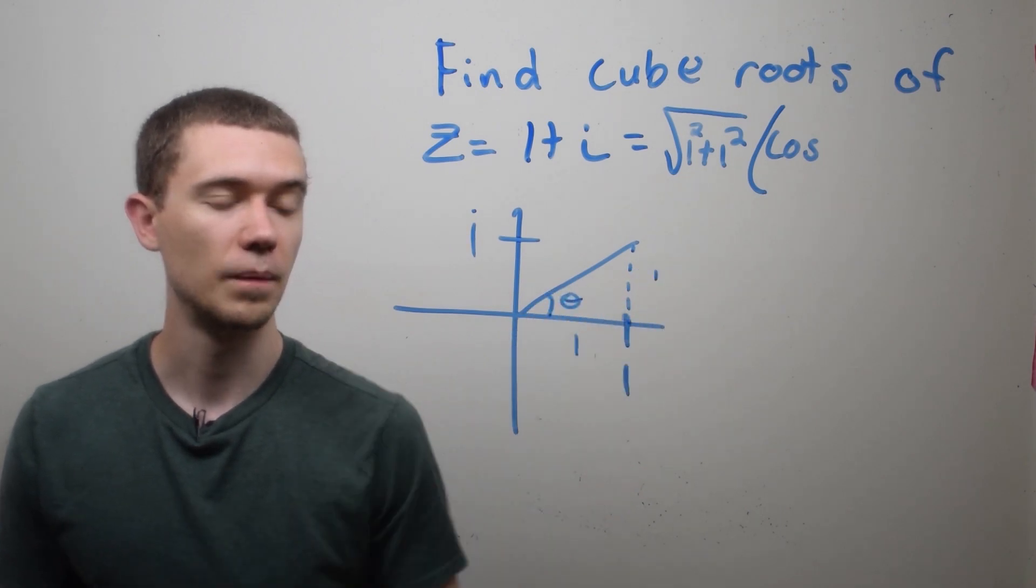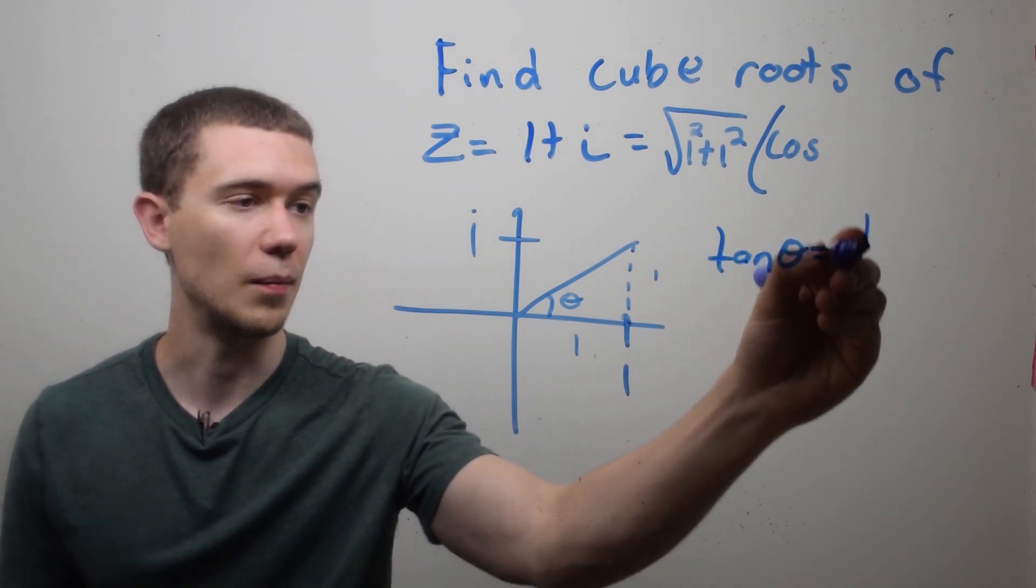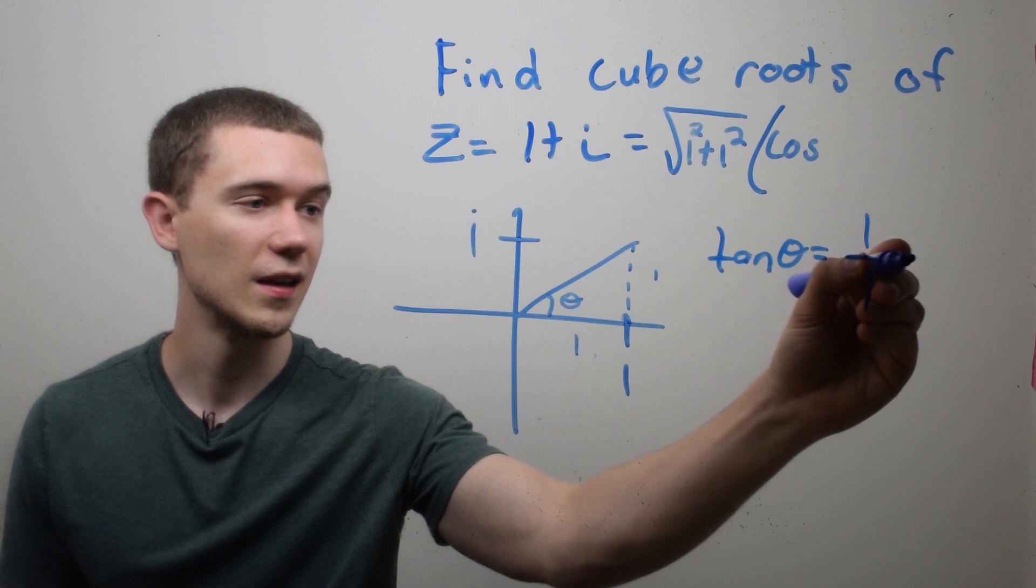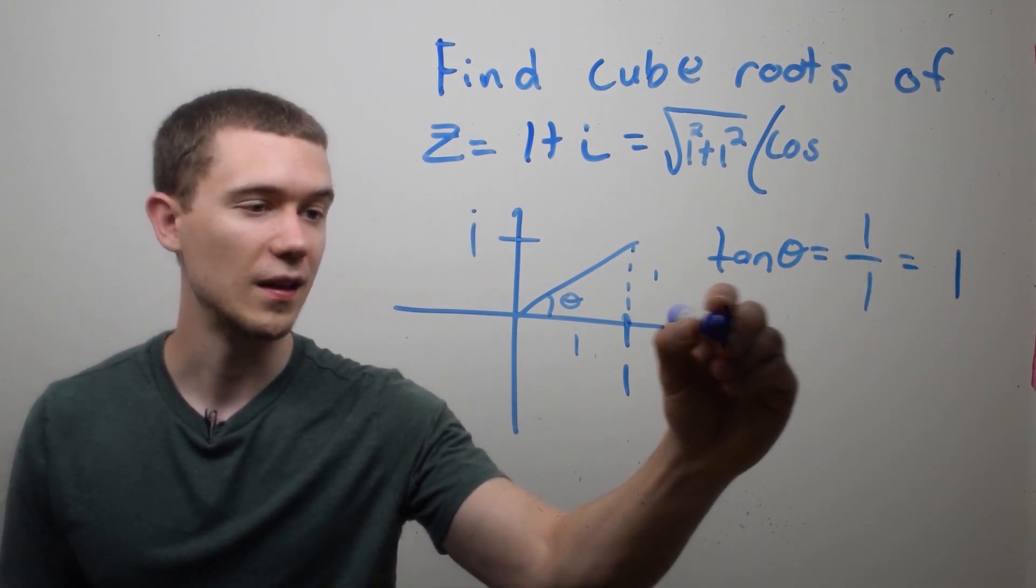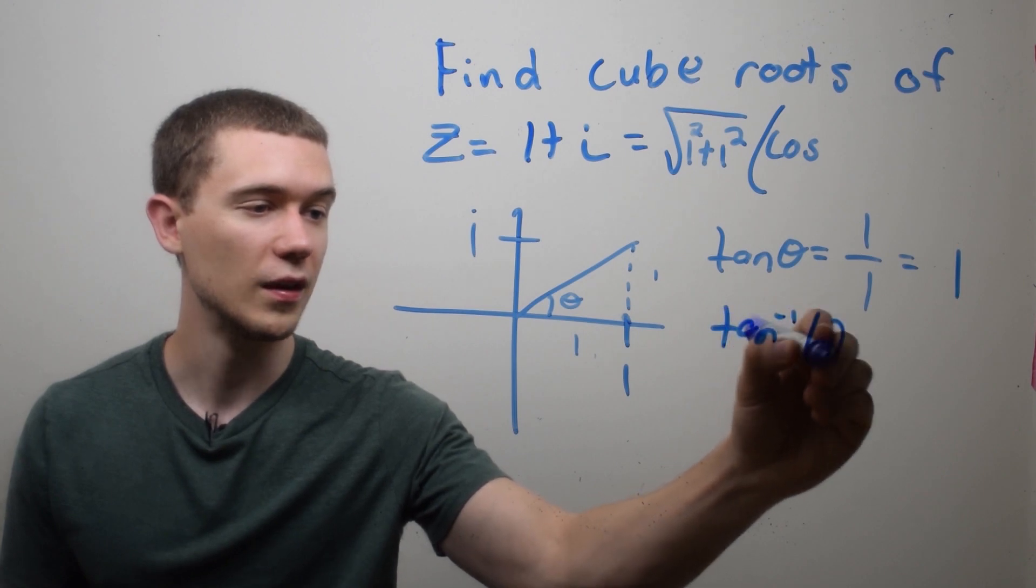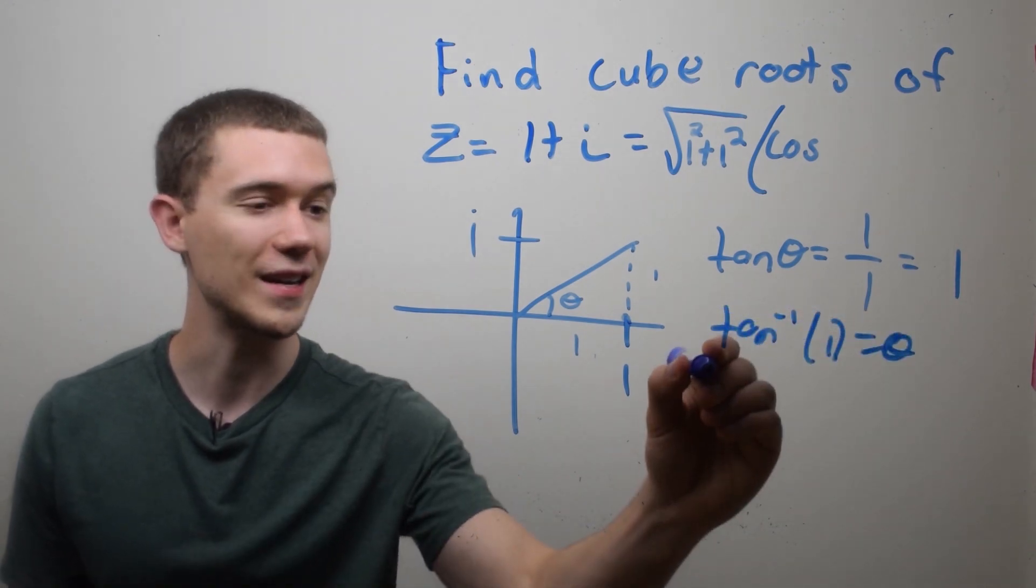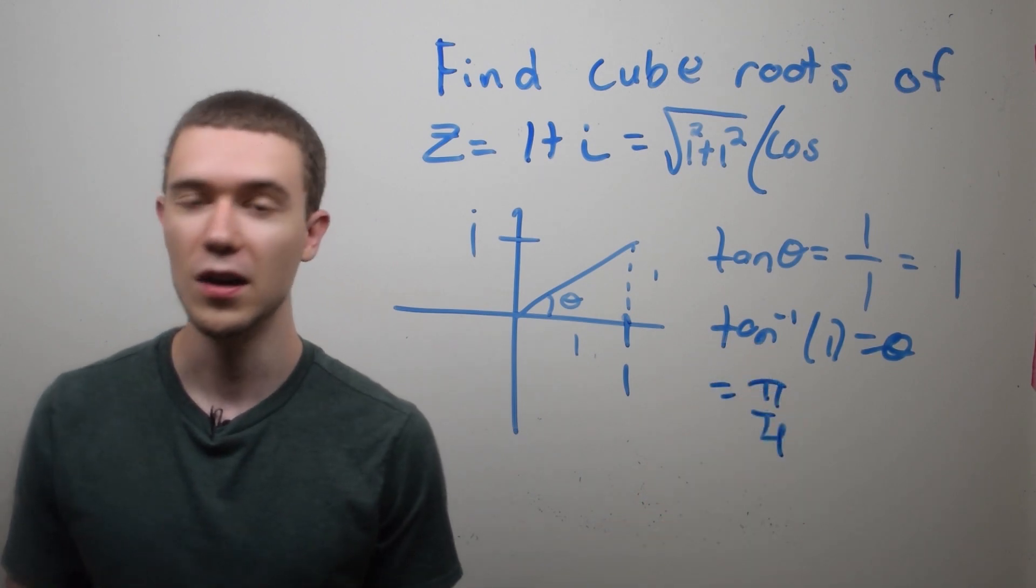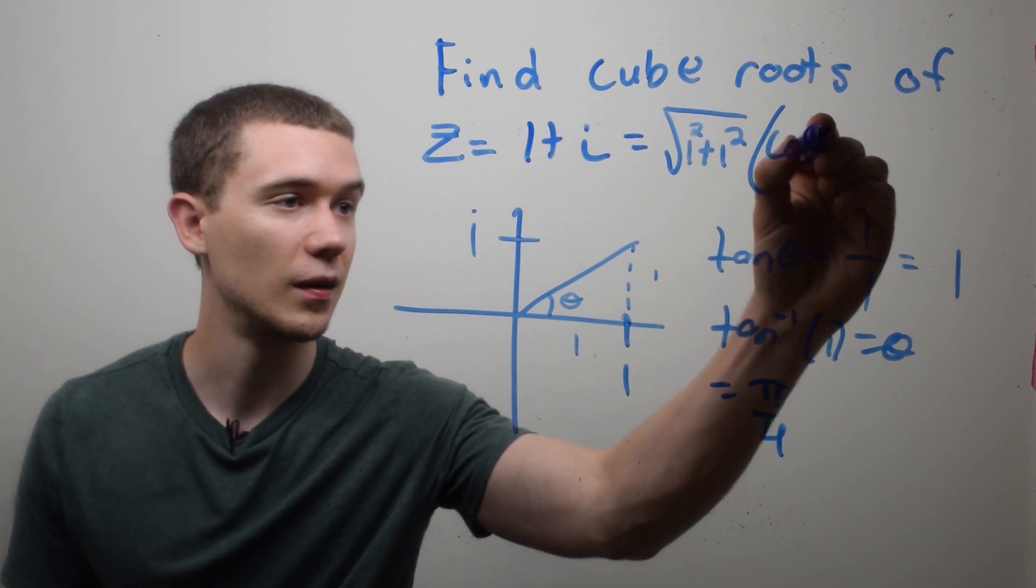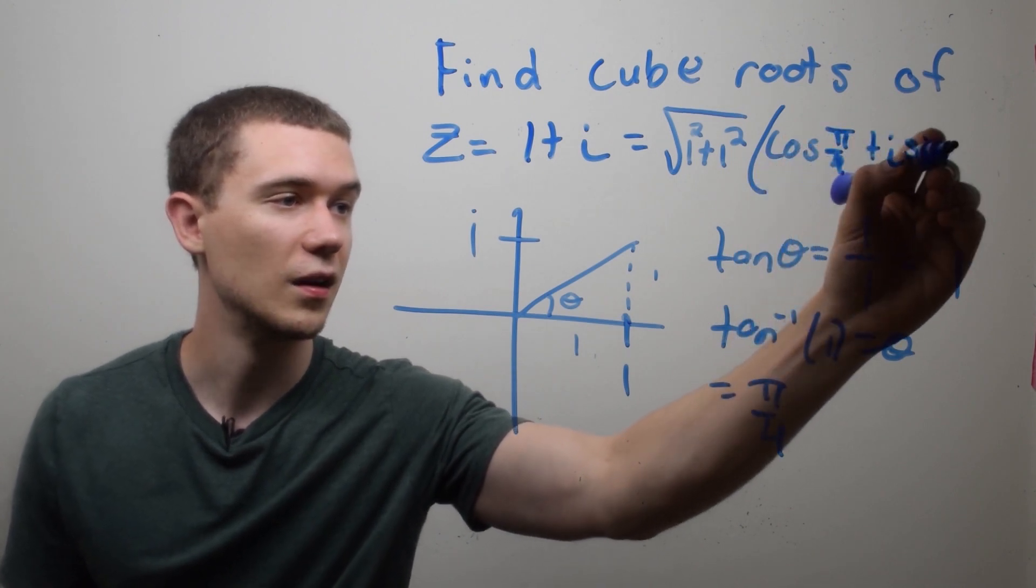It's 1 in the real direction and 1 in the i direction. And if you make this triangle, this triangle has legs 1 and 1, which means that the tangent of this angle theta opposite over adjacent is equal to 1 over 1 or 1, meaning that the inverse tangent of 1 is equal to theta. If you put that in a calculator or you're good with the trig identities, this is going to be pi over 4 radians or 45 degrees. So that's the argument of this number.